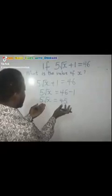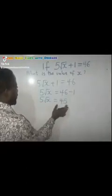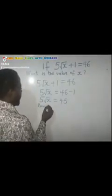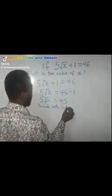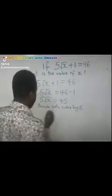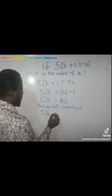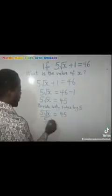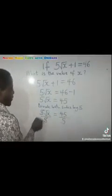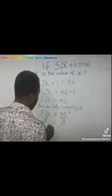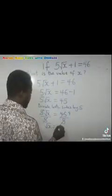Now, you can see that 5 is common in both sides. So in that case, I'm going to divide both sides by 5. Then I will be having 5 root x equals to 45, then all over 5. This 5 will cancel this, then we have 9. Then I'm going to have root x equals to 9.